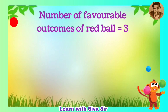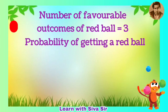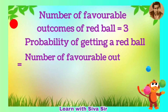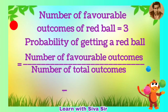Number of favorable outcomes of red ball equals 3. Probability of getting a red ball equals number of favorable outcomes by number of total outcomes equals 3 by 8.